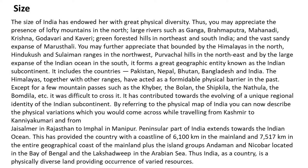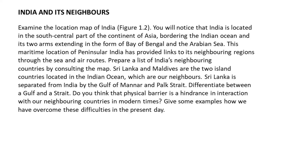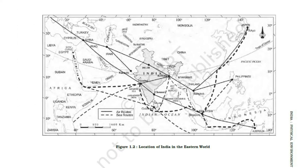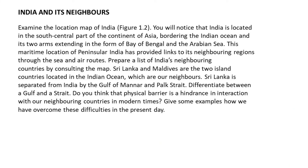Thus India, as a country, is a physically diverse land providing occurrence of varied resources. India is located in the south-central part of the continent of Asia, bordering the Indian Ocean and its two arms extending in the form of the Bay of Bengal and the Arabian Sea. This maritime location of peninsular India has provided links to its neighboring regions through sea and air routes. Sri Lanka and Maldives are the two island countries located in the Indian Ocean which are our neighbors. Sri Lanka is separated from India by the Gulf of Mannar and Palk Strait. Do you think that physical barriers are a hindrance to interaction with neighboring countries in modern times? Give some examples of how we have overcome these difficulties in the present day.